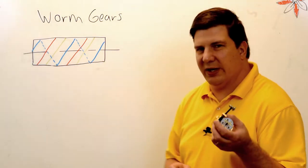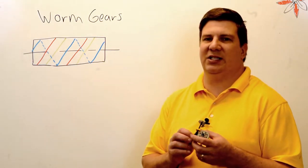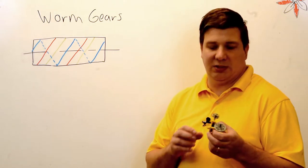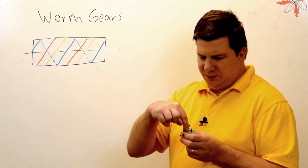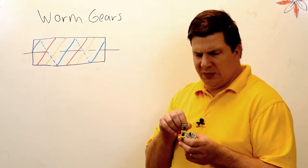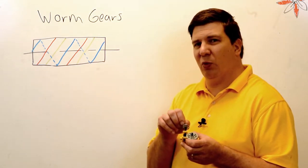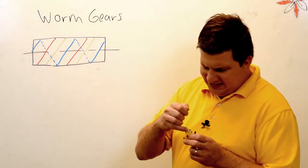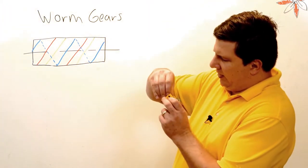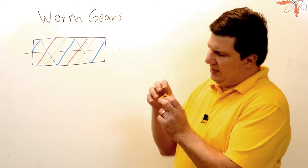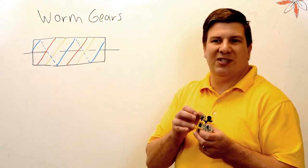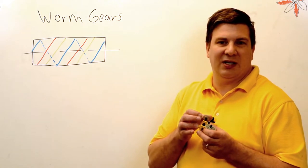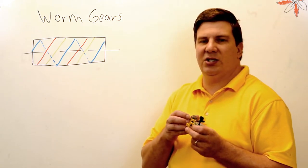So this gear right here is a single indexing system. It only has one set of thread going around it. So with every turn, I only move one tooth and that same one, two, almost three teeth here that are engaged. And that's pretty good. Are the same three teeth of that worm gear that are always engaged.